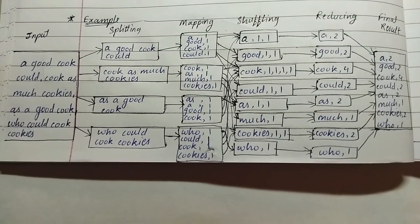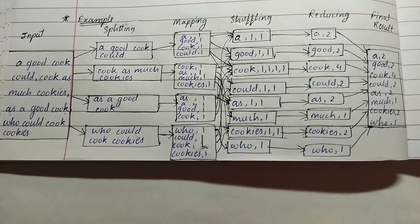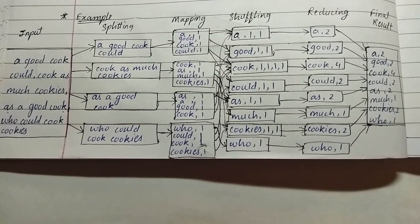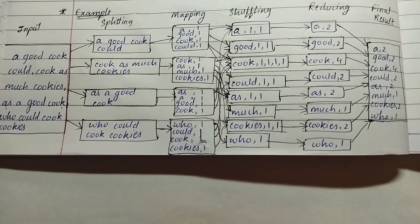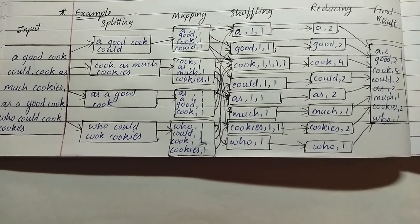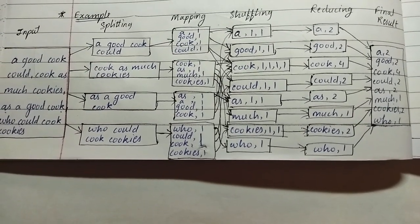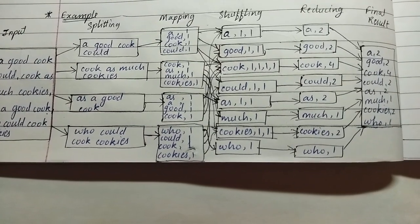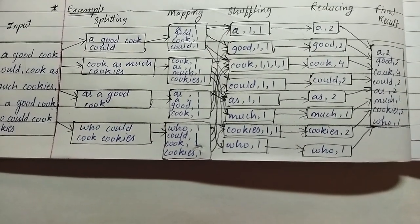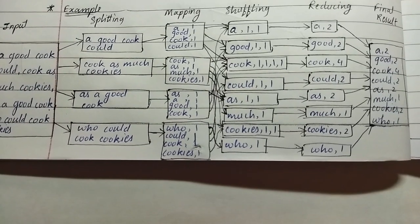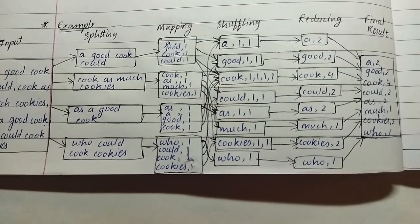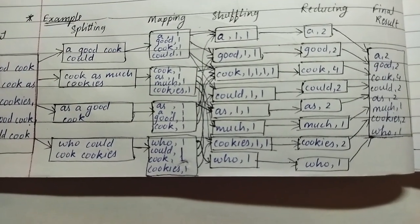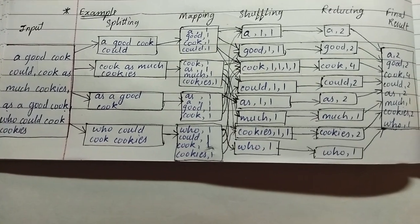After splitting, mapping will be performed. Then after mapping, shuffling occurs. If there are any similar words appearing twice, then it will be counted in the shuffling. Then after shuffling, all the appearances will be summed up in the reducing step. After reducing, we'll get the output in the final result. This is how MapReduce works.